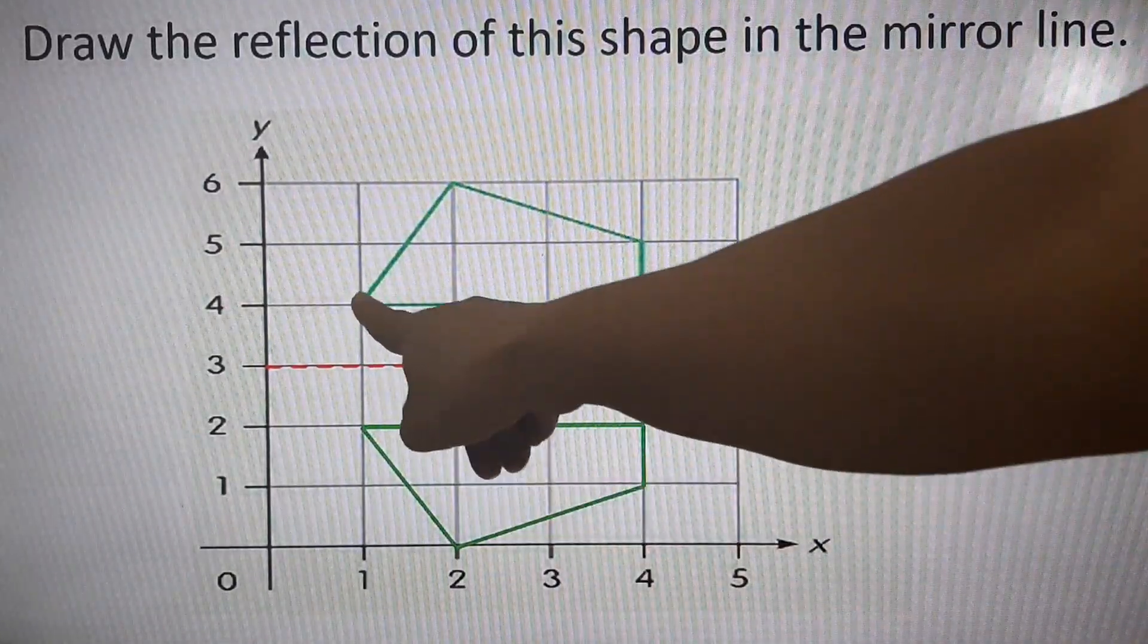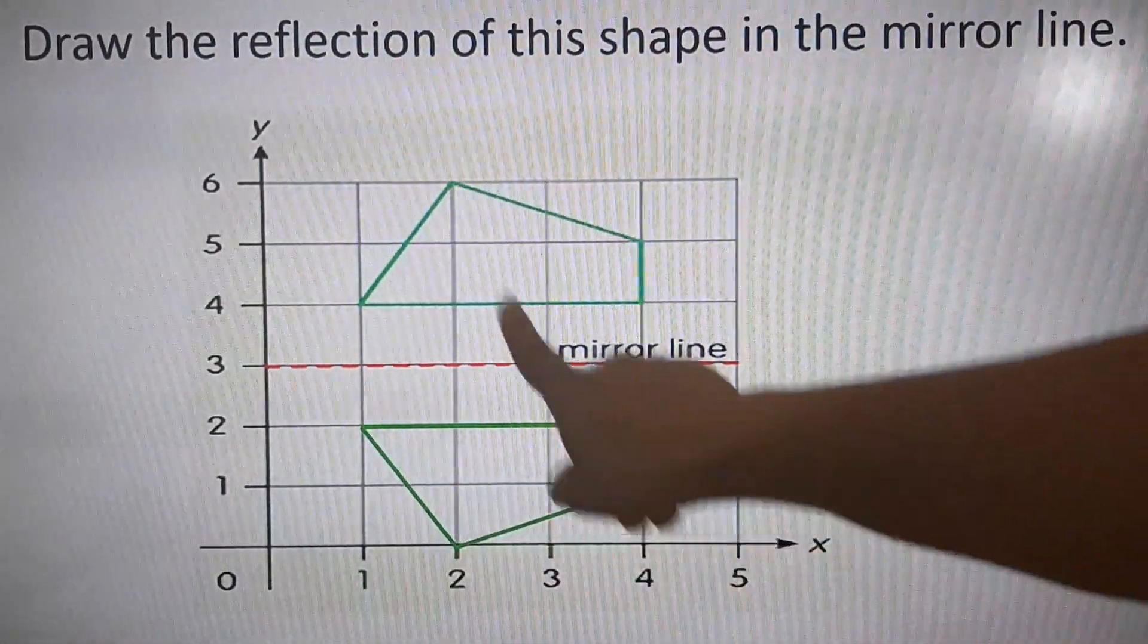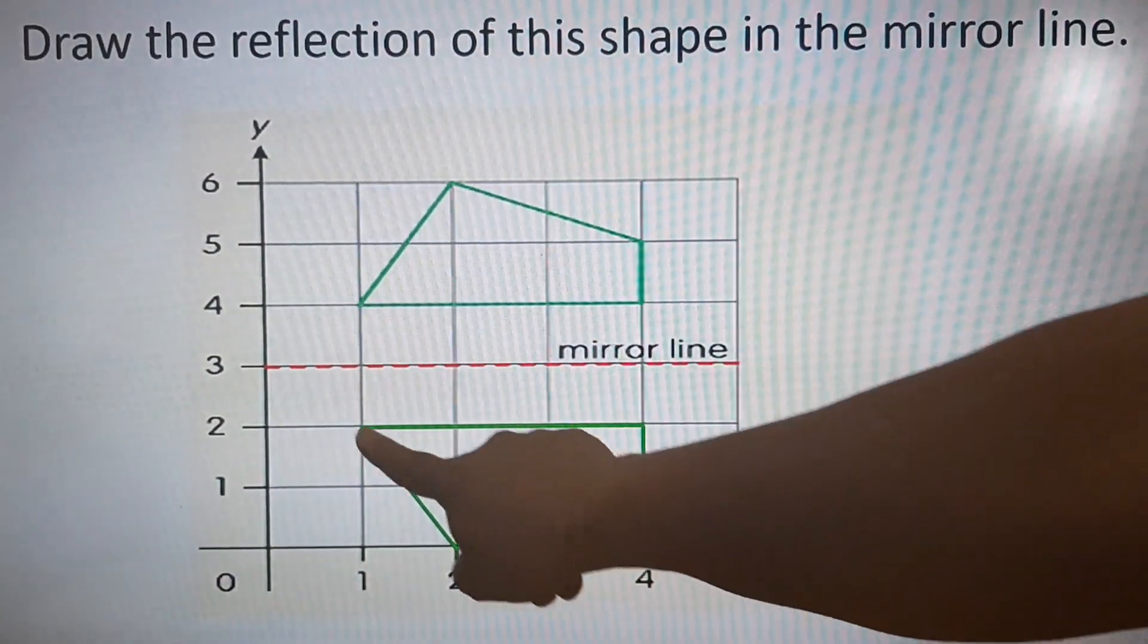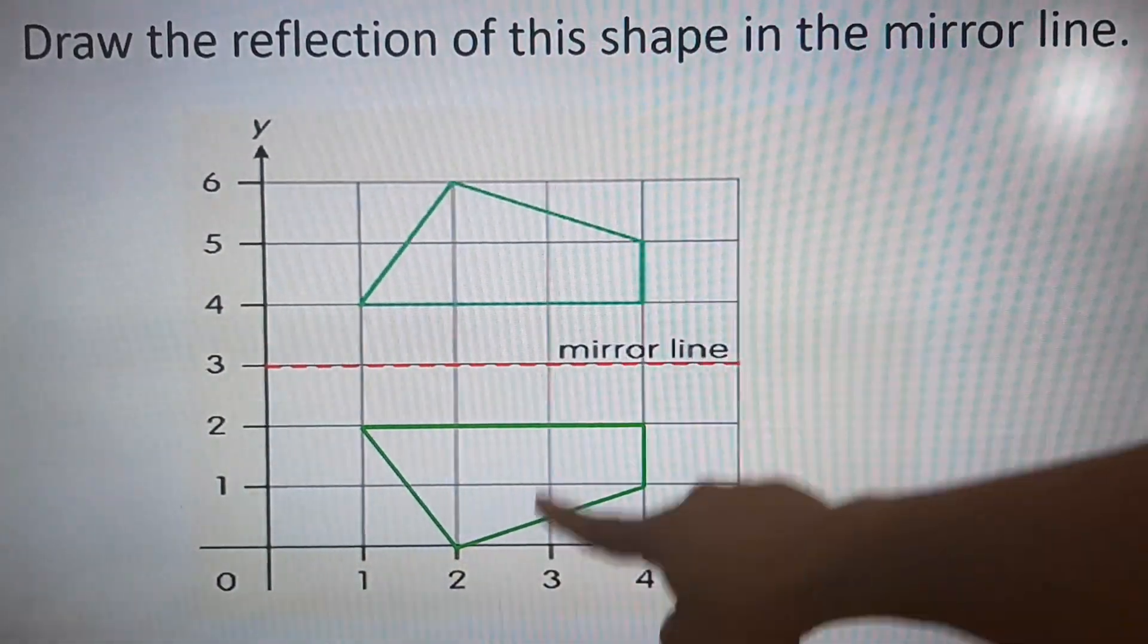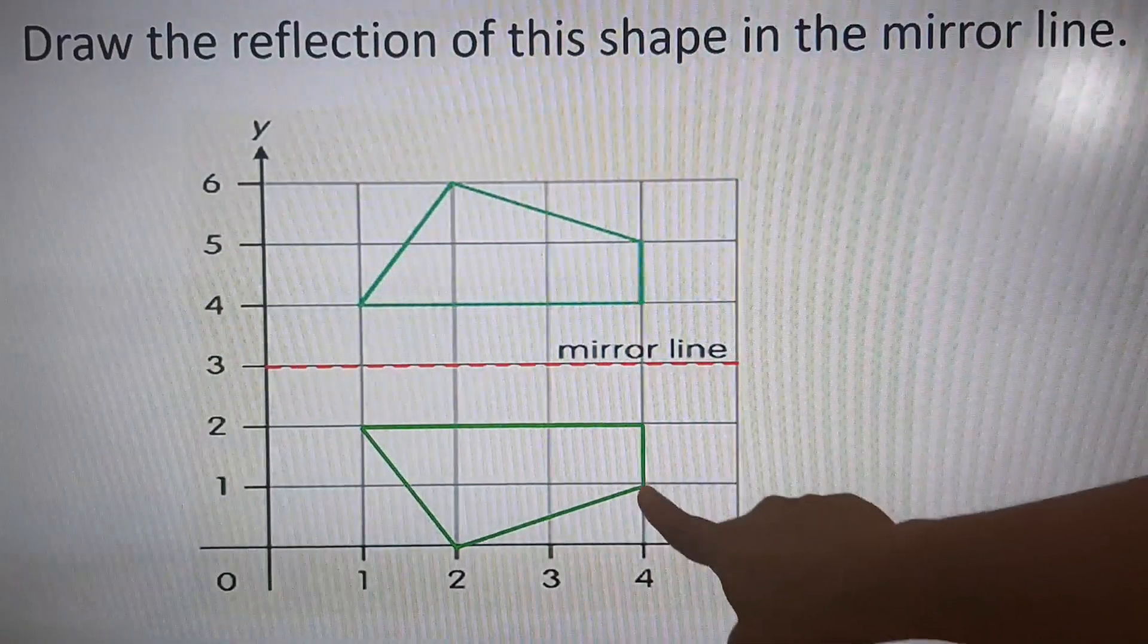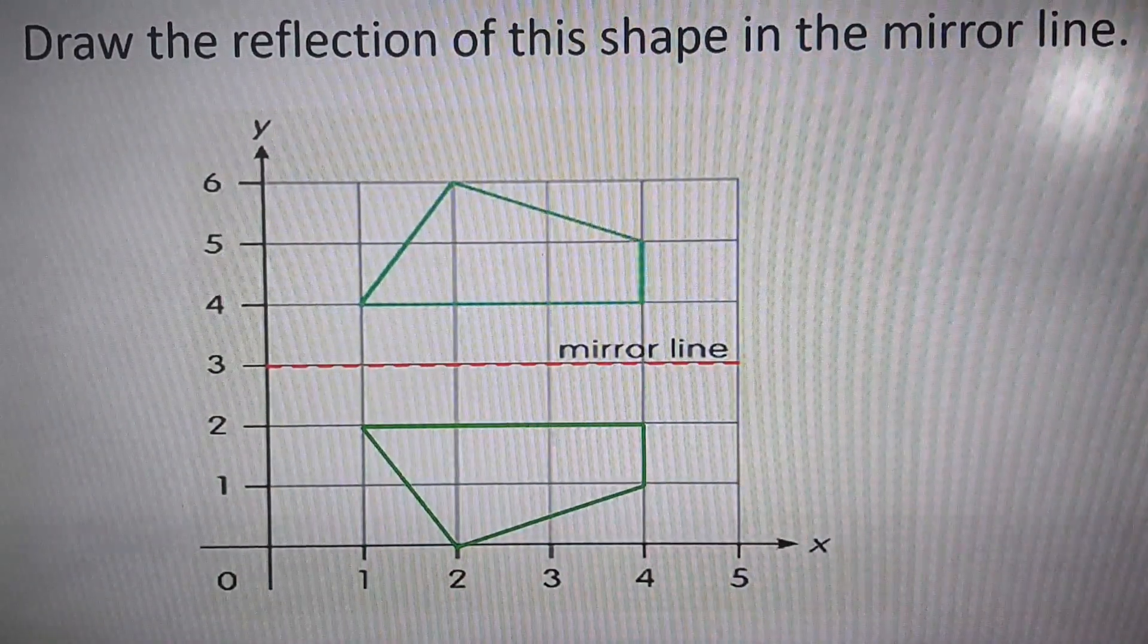So, the reflection of this line is here. Reflection of this line is here. Same with this. And this one. Same with this line. Very good.